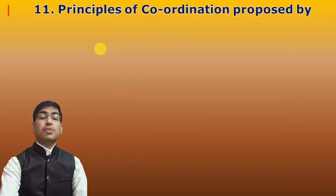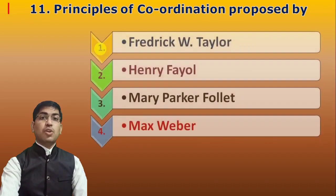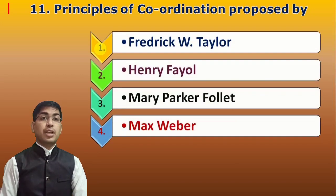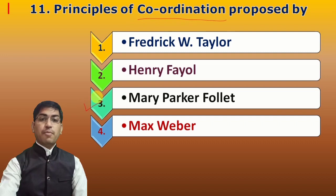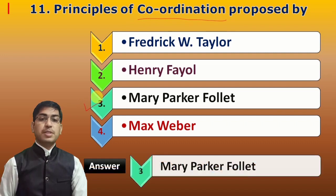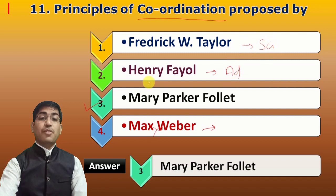Next question: Principles of coordination were proposed by which scientist? When the word coordination appears, the answer is Mary Parker Follett. Max Weber discussed bureaucracy, Henry Fayol discussed administrative management, and Frederick Taylor discussed scientific management. So the answer is Mary Parker Follett.